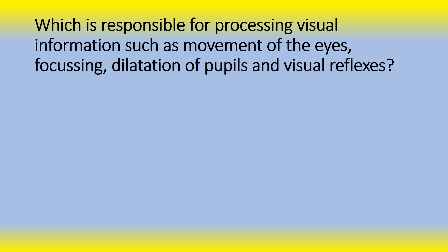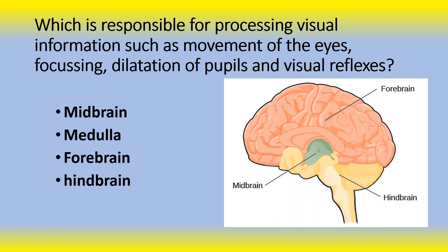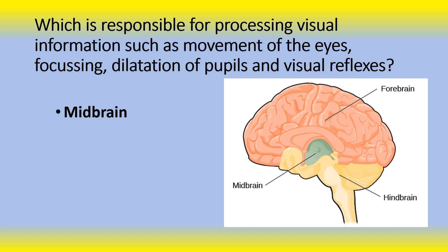Next question: Which is responsible for processing visual information such as movement of the eyes, focusing, dilatation of pupils, and visual reflexes? Is it the midbrain, the medulla, the forebrain, or the hindbrain? The answer is the midbrain. The midbrain is part of the central nervous system located below the cerebral cortex and at the topmost part of the brainstem. It is small but plays an important role in processing visual information such as eye movement, focusing, dilatation of pupils, and visual reflexes.